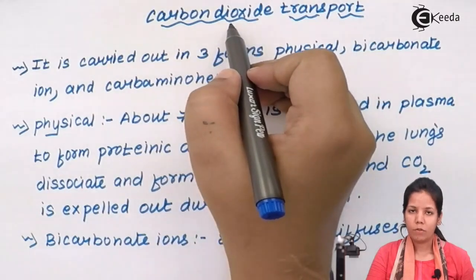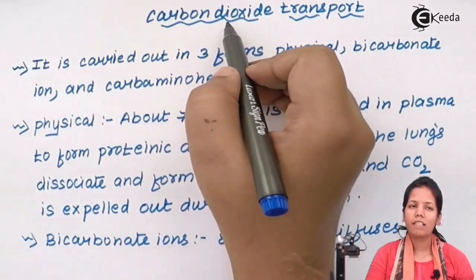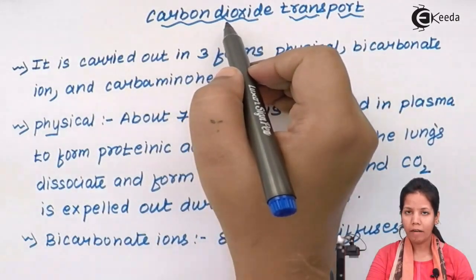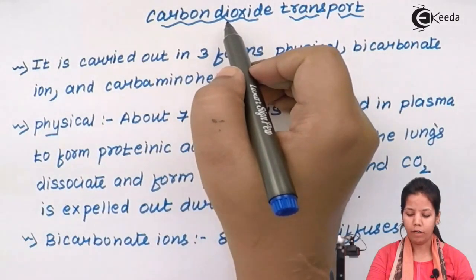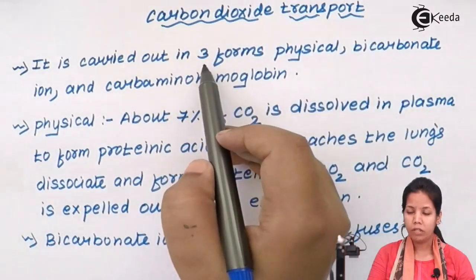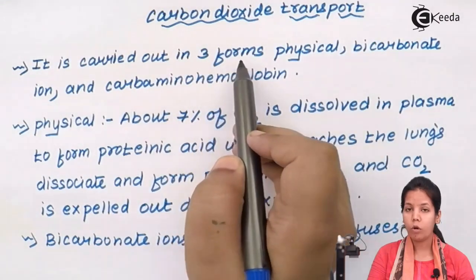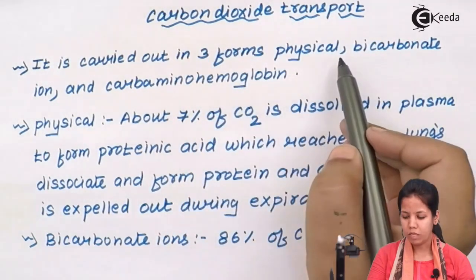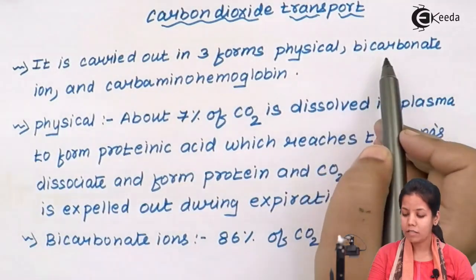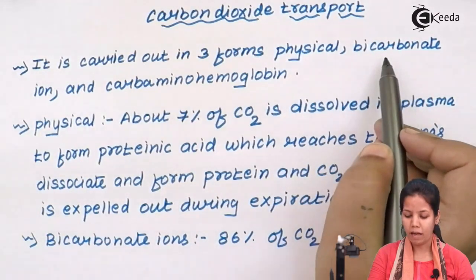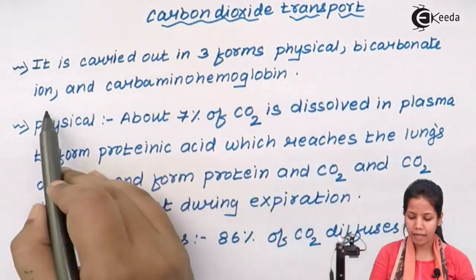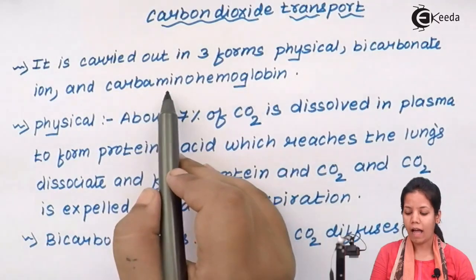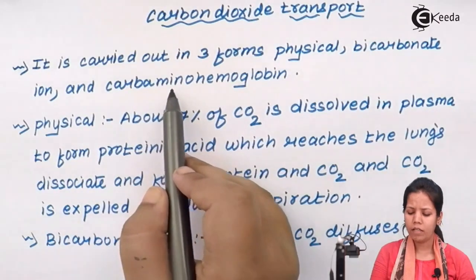Carbon dioxide transport, or removal of carbon dioxide from the body, is carried out in three different forms or pathways. The first is the physical form. The second is in the form of bicarbonate ions. And the third form is the carboaminohemoglobin form.